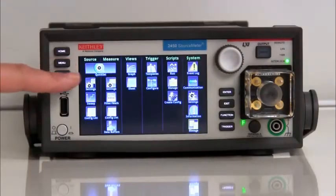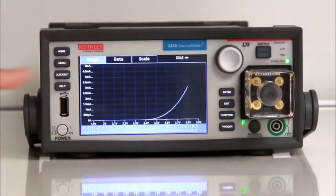One of the powerful features of the Model 2450 is its built-in graphing capability. Very quickly you can see your current versus voltage or IV measurements plotted for you right on the instrument.